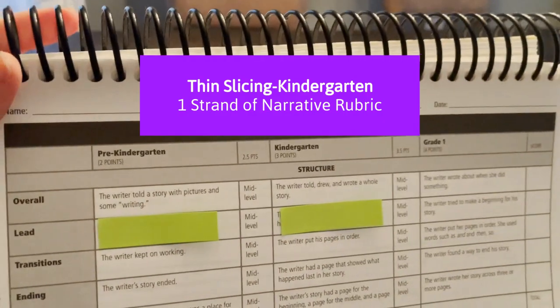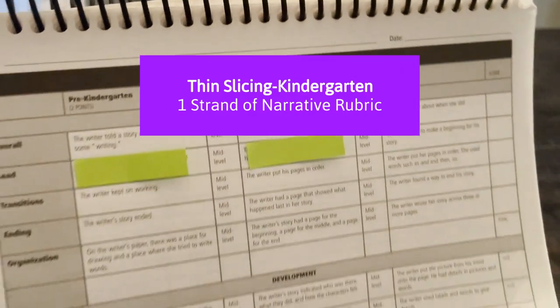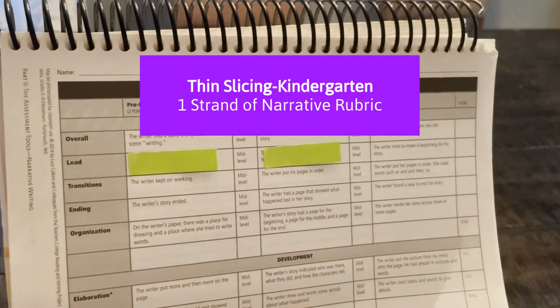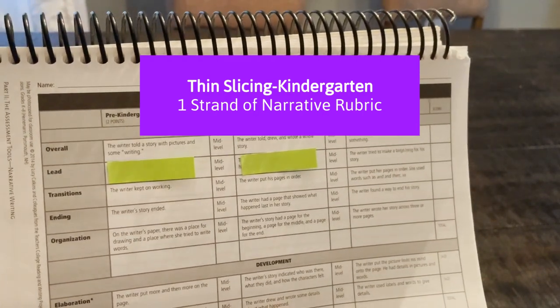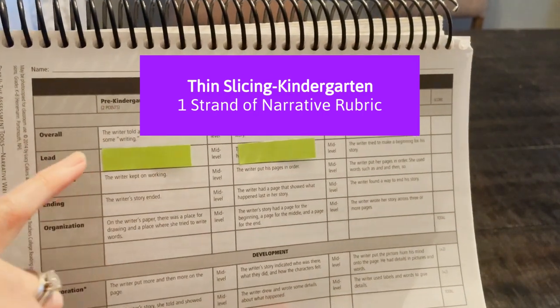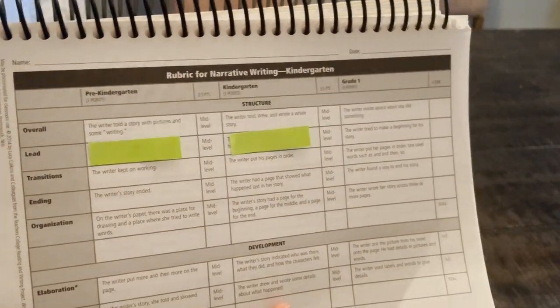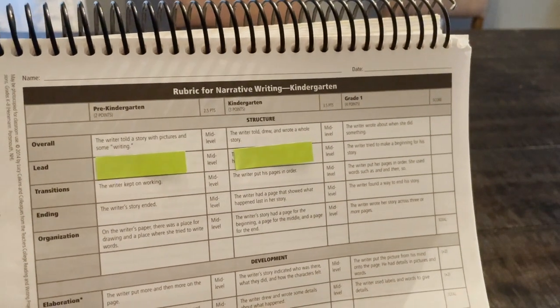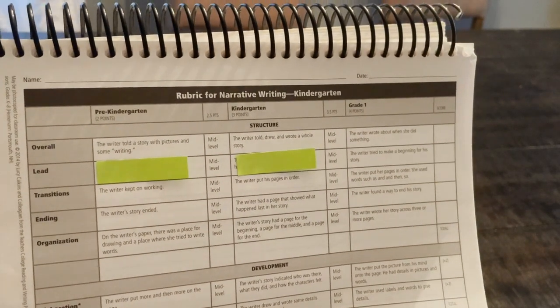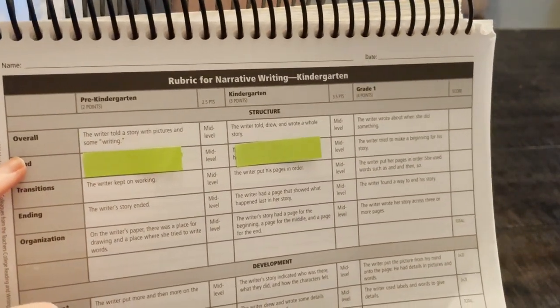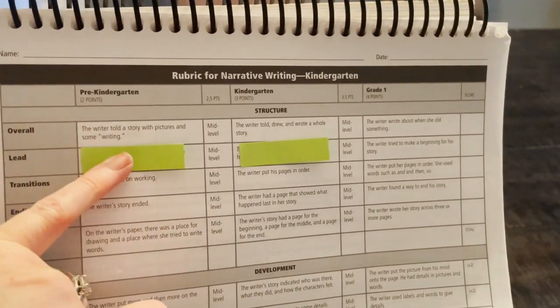We're going to do some thin slicing and I'm going to use this rubric. This is from the Writing Pathways book and we're going to look at the pre-kindergarten and the kindergarten. This is the kindergarten writing that we're looking at and we're going to look at the overall strand of the rubric.